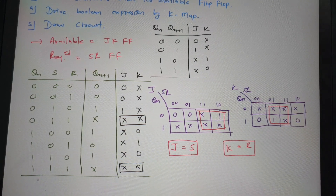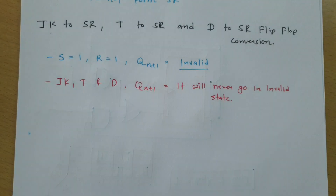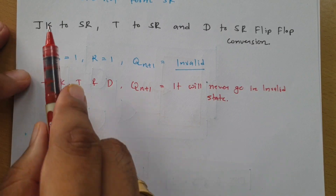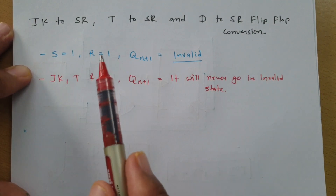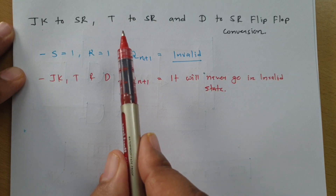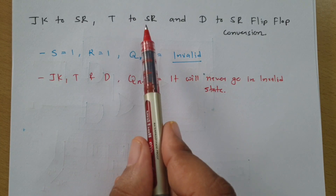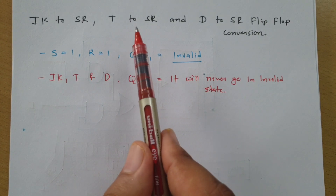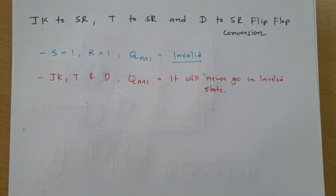Similarly, we cannot form SR flip-flop using T flip-flop or D flip-flop either. I have seen students following the 5 steps and calculating this, but it is not at all possible. In IAS examinations, this type of question appears — like forming T to SR flip-flop — but one cannot form T to SR flip-flop. The 5 steps are not applicable to form SR flip-flop. Thank you so much for watching.